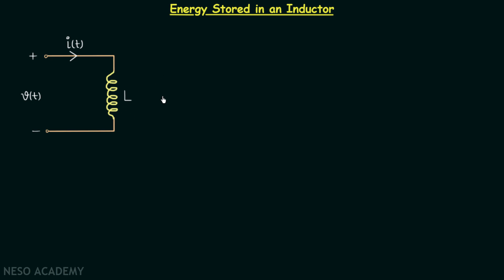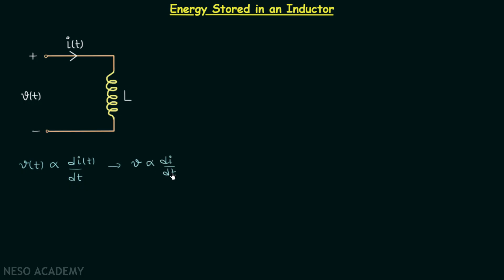An inductor is an element whose terminal voltage is proportional to the time rate of change of current through the inductor. So voltage V(t) is proportional to the time rate of change of current through the inductor, and sometimes the same thing is written as V proportional to di/dt.